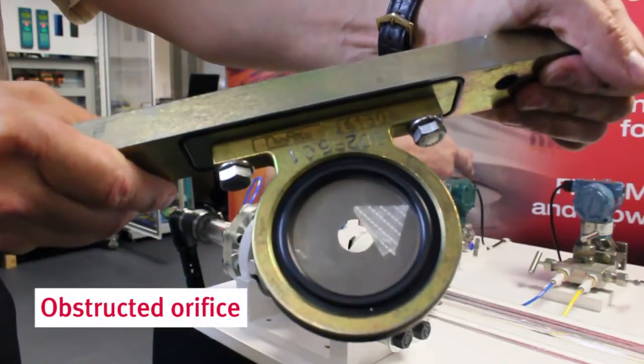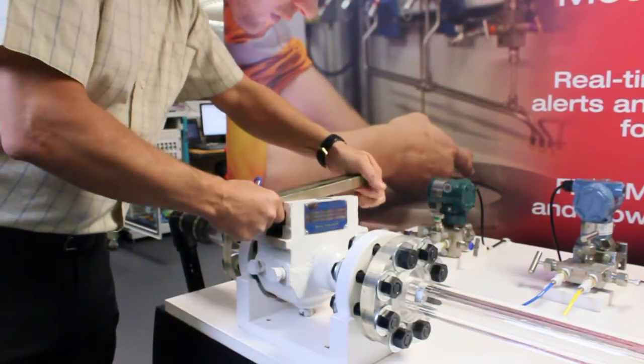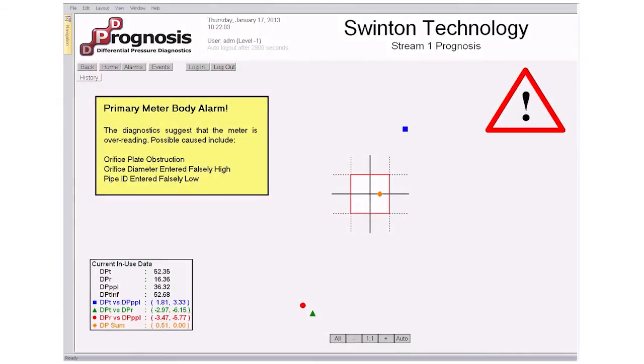We'll now see how Prognosis responds to an obstruction in the meter, simulated here by a piece of tape across the orifice hole. We see straight away that the points move outside the box, indicating a malfunction in the meter system.